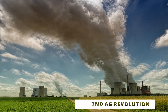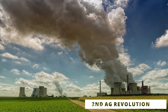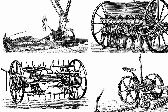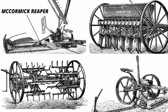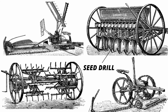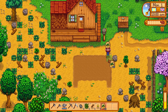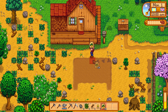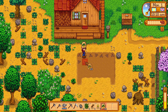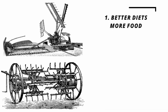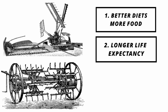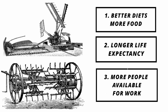Then there's the second agricultural revolution, where we humans show our true colors with the industrial revolution and mechanization of farming — tools such as the McCormick Reaper, which sounds a lot like a bad time on a Tuesday night. We also have tools like the seed drill, which saved farmers from the back-aching process of planting each seed individually. The second agricultural revolution would lead to better diets and more food, longer life expectancy, and more people in the labor force, particularly in families.